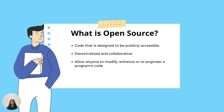First of all, what is open source? Open source is a term that originally referred to open source software. Open source software is code that is designed to be publicly accessible — that is, anyone can see, modify, and distribute the code as they see fit. Open source software is developed in a decentralized and collaborative way, relying on peer review and community production.